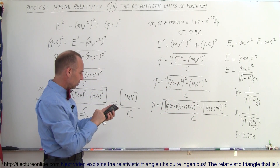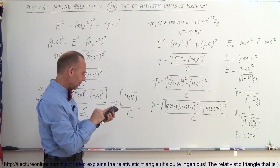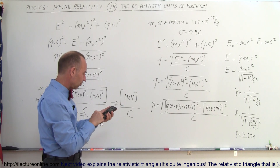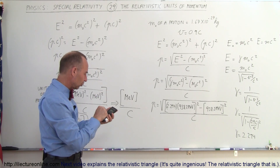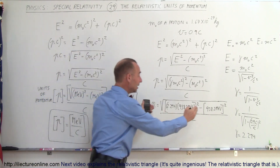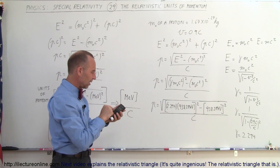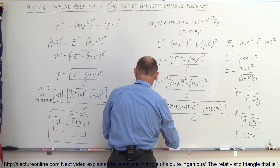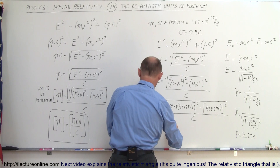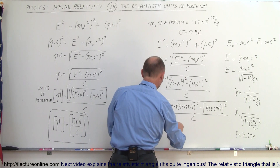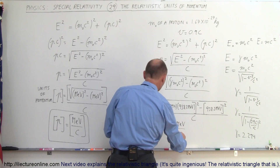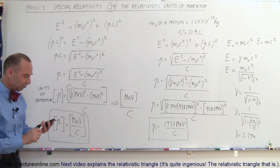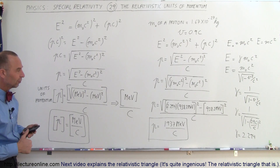So we have 938.2 squared times 2.294 squared, minus 938.2 squared, and now we have the quantity underneath the radical. We take the square root of that, and P is equal to 1,937 million electron volts divided by the speed of light. Notice that falls right in line with the units we said we'd have for momentum: million electron volts divided by the speed of light.